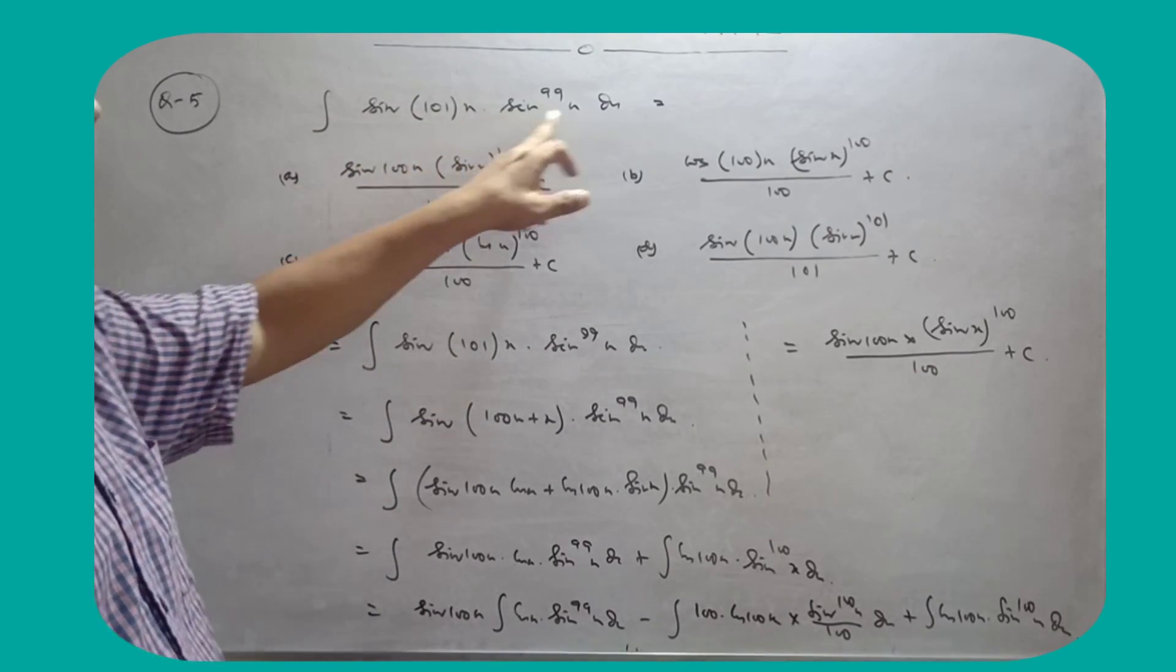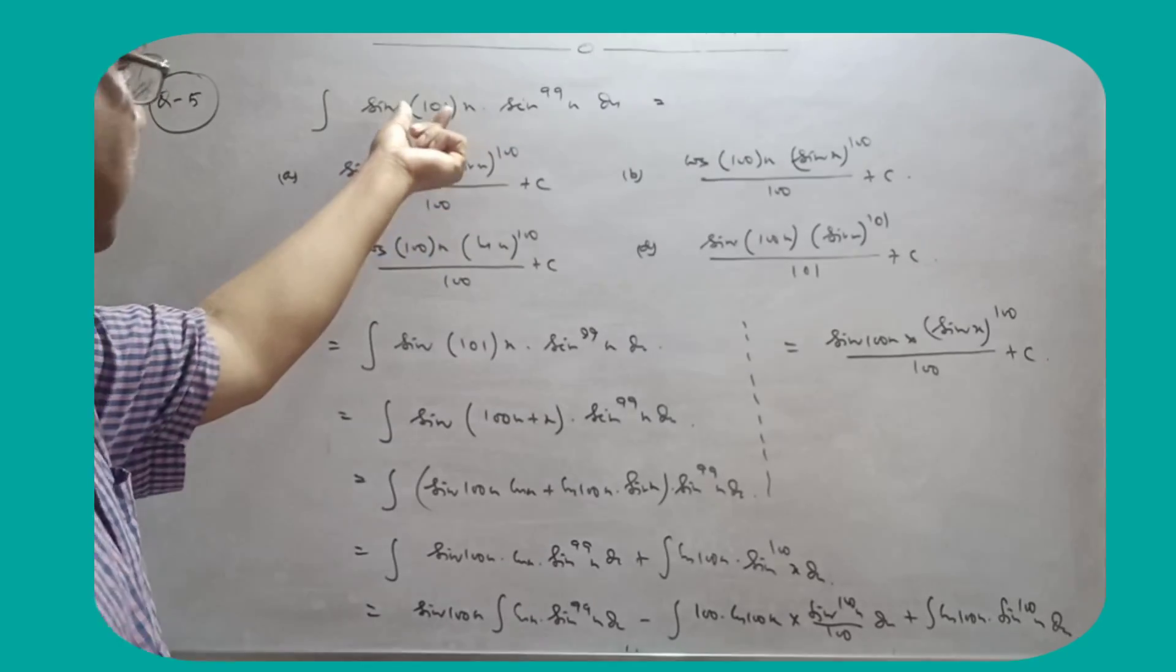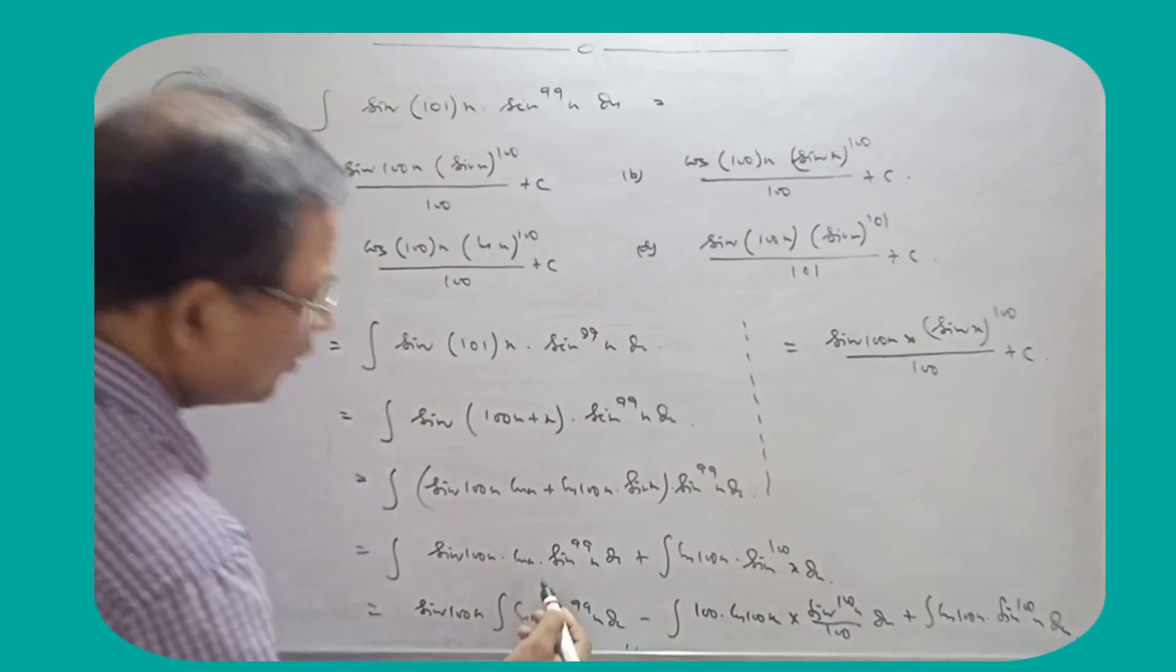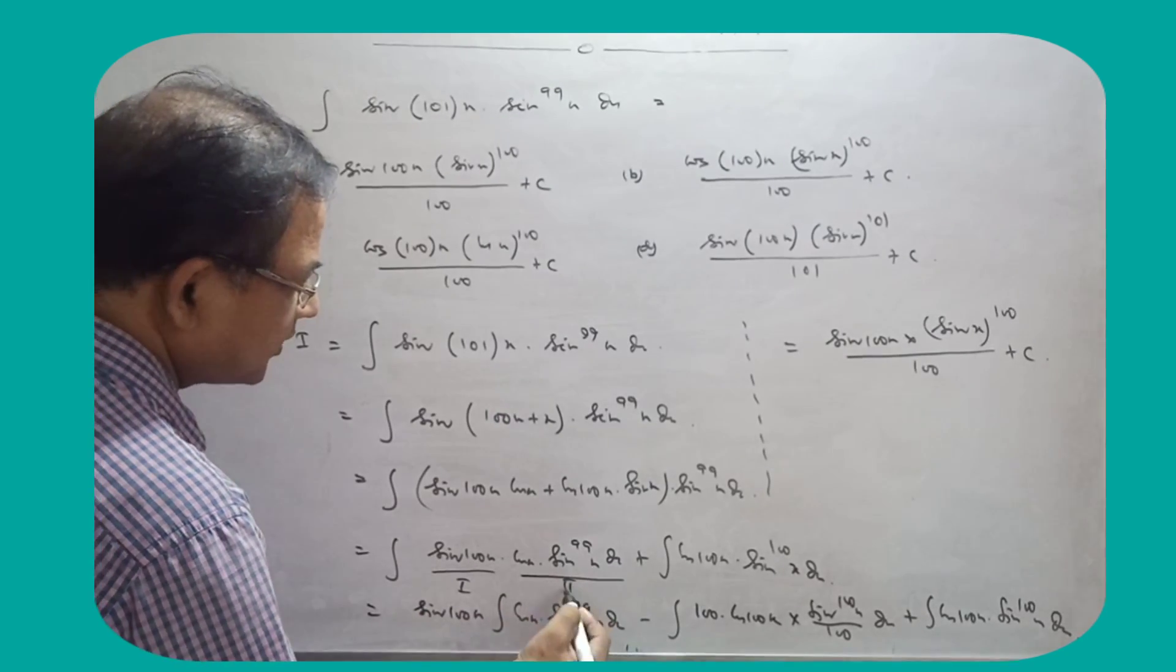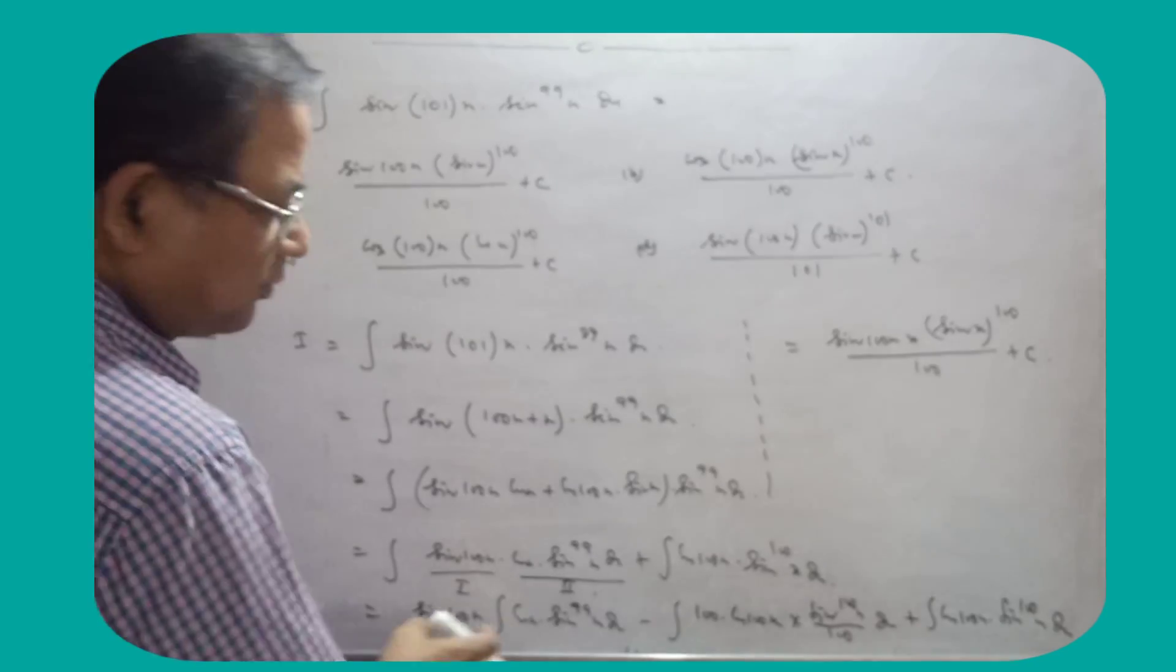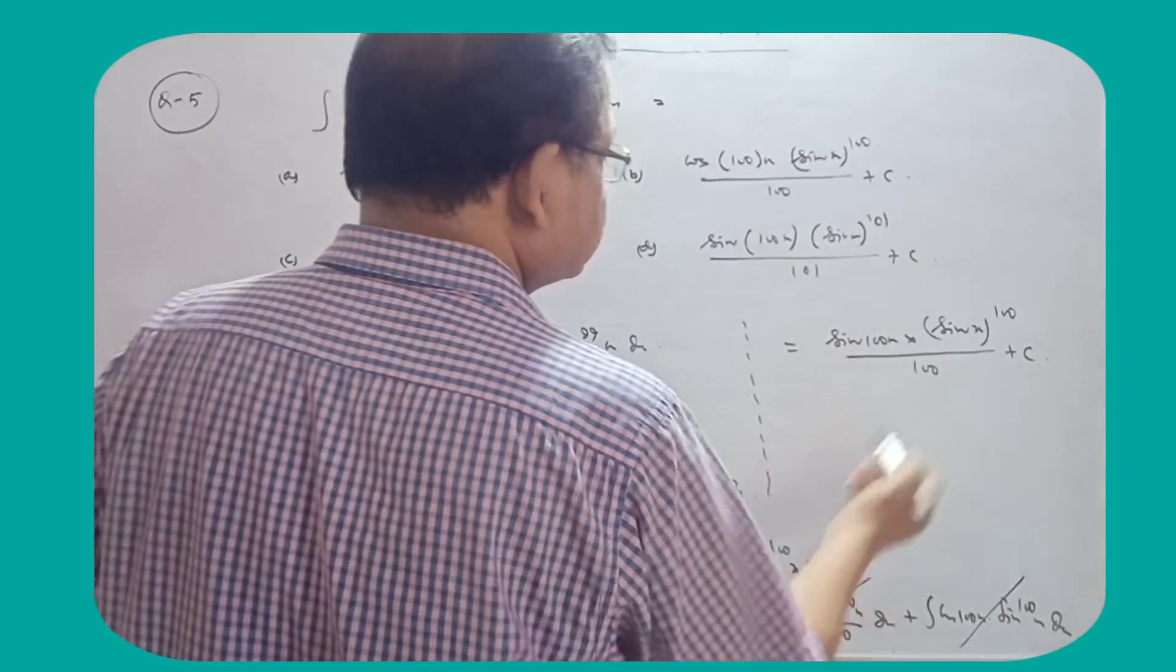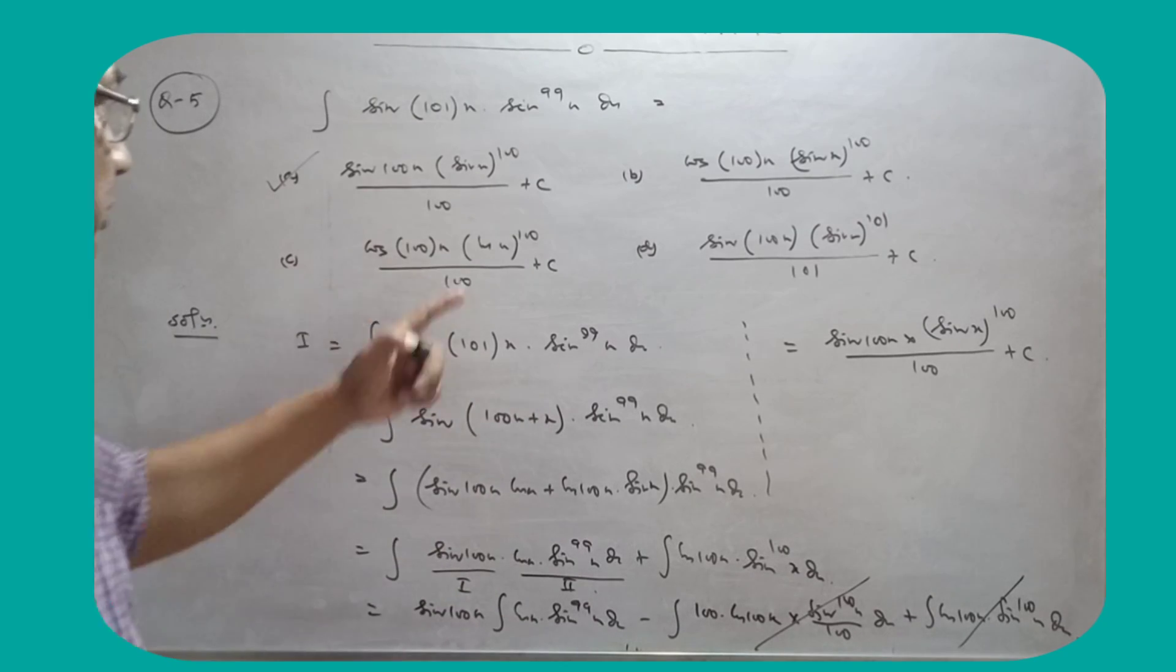Now, sin of 101x into this dx, what will it be? This type of question. You have to break this. Okay? After that what? This into this plus this into this. After multiplying, what will it be? This will be. Now, this, clear, what will you do with this? Take this as first function, take this as second function. Okay? And apply integration by parts. Okay? When you apply integration by parts, see. So this is the solution. So that means what? This is the right choice for this entry.